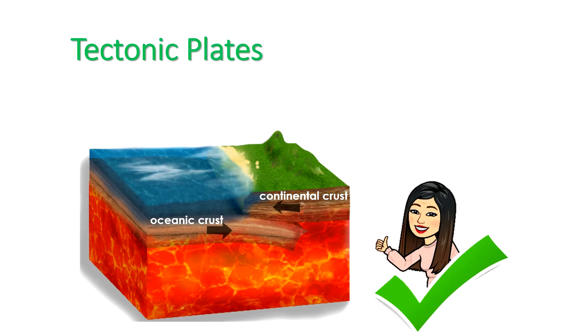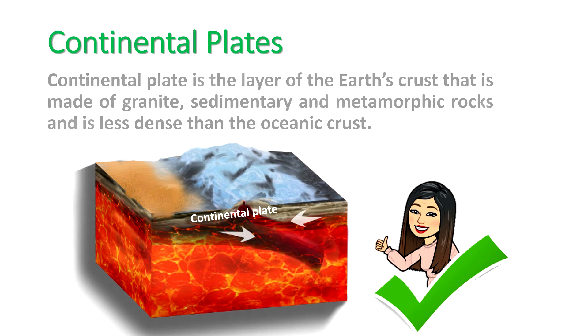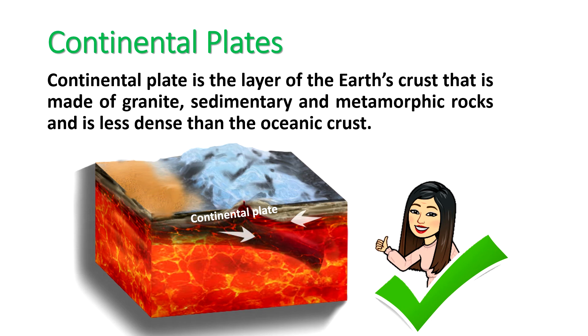But before we discuss the different types of plate boundaries, we recall first tectonic plates. Tectonic plates are pieces of solid rock, generally composed of both continental and oceanic crusts. Continental plate is the layer of the Earth's crust that is made of granite, sedimentary, and metamorphic rocks, and is less dense than the oceanic crust.